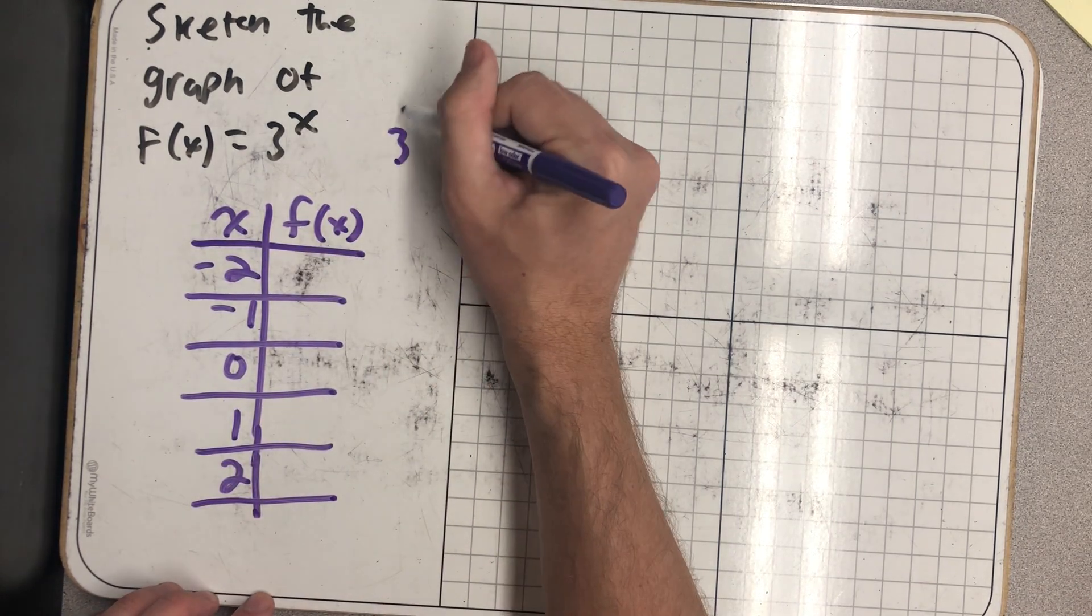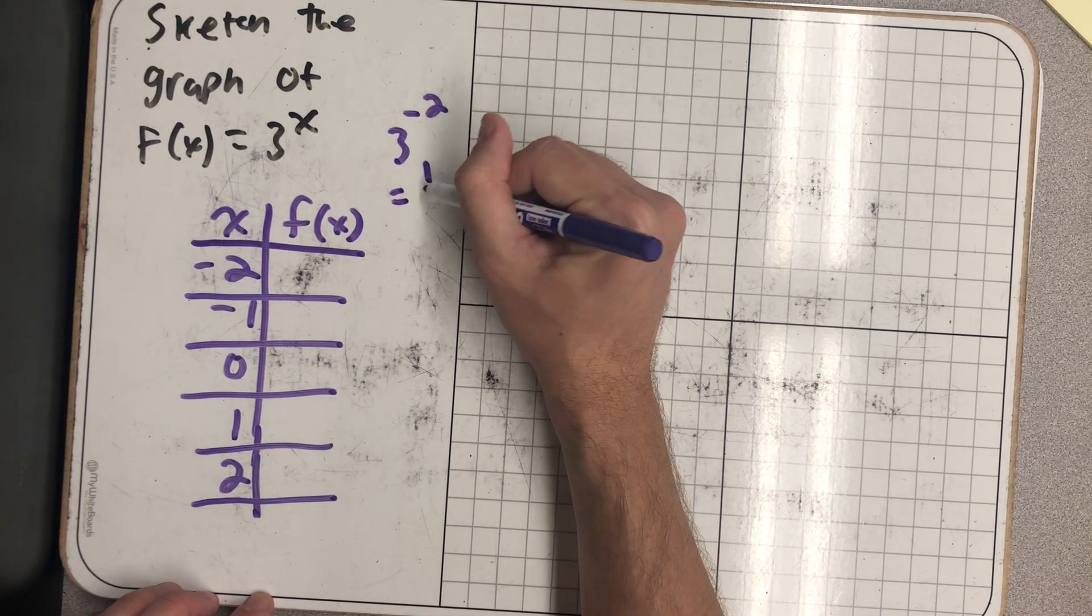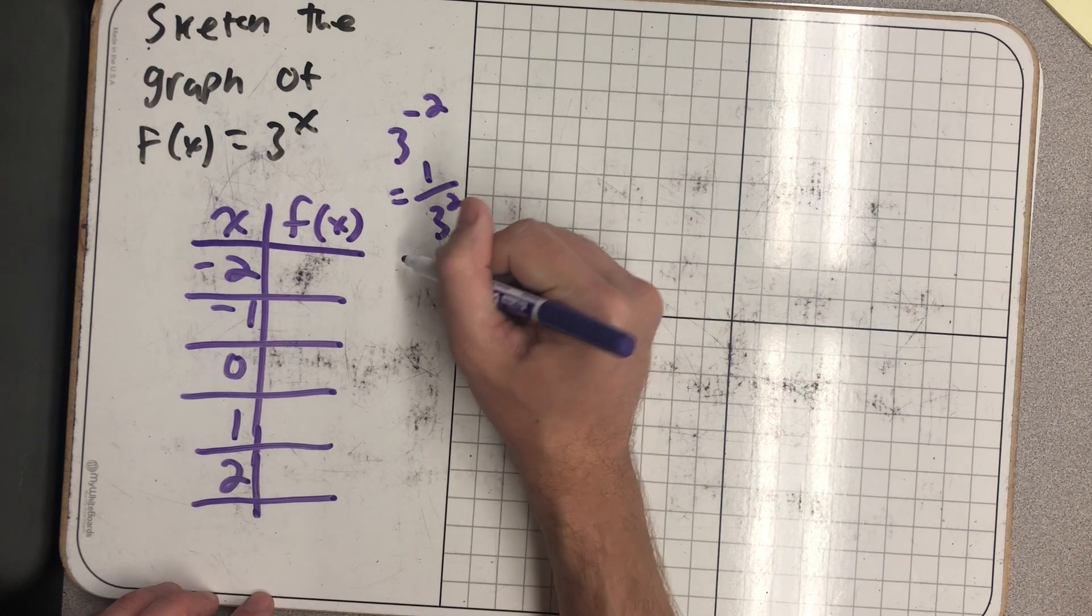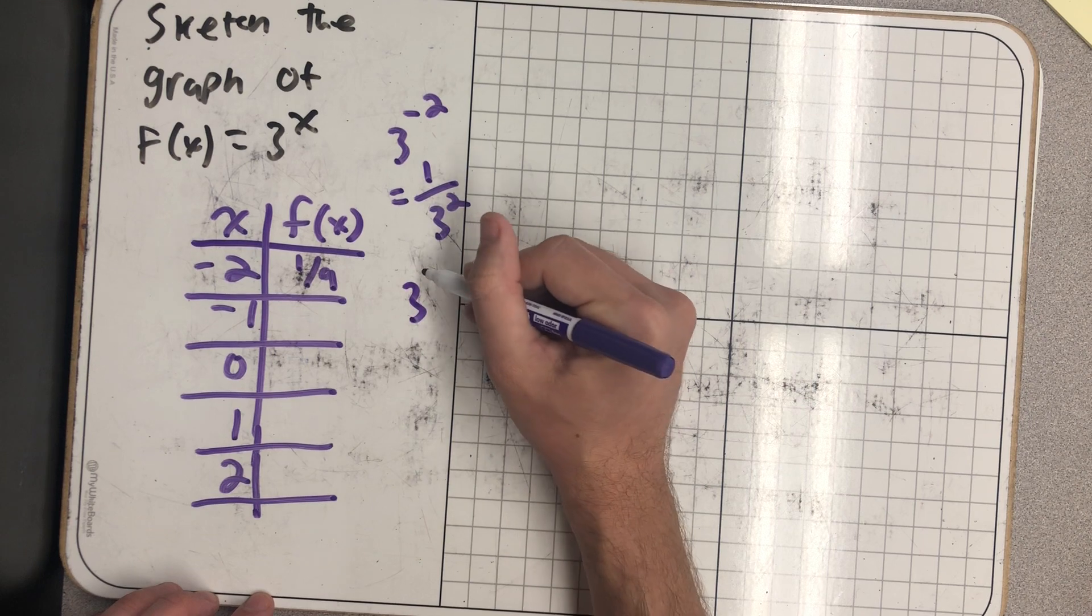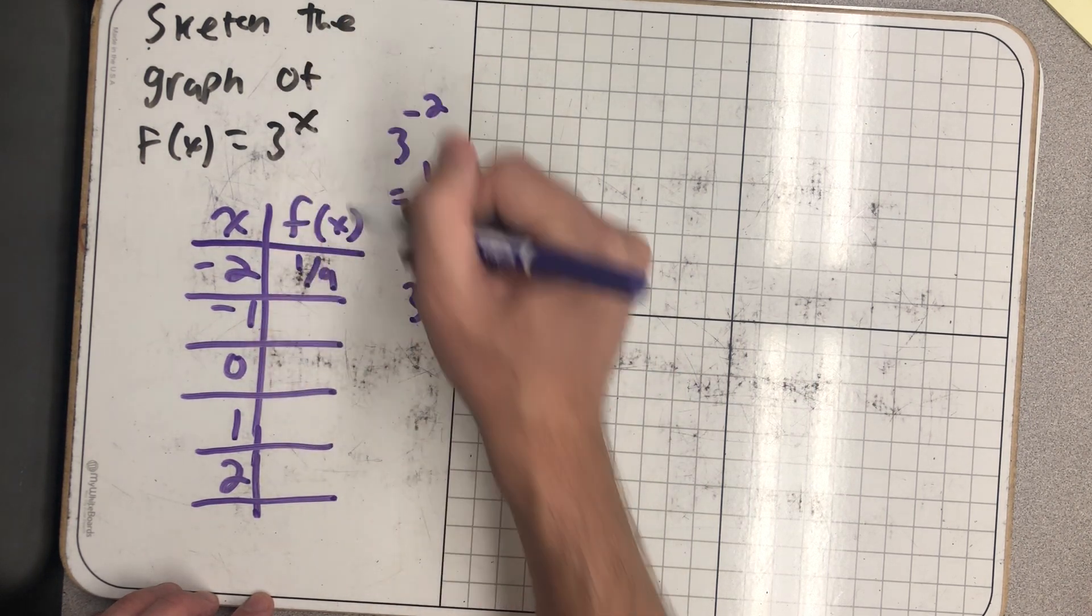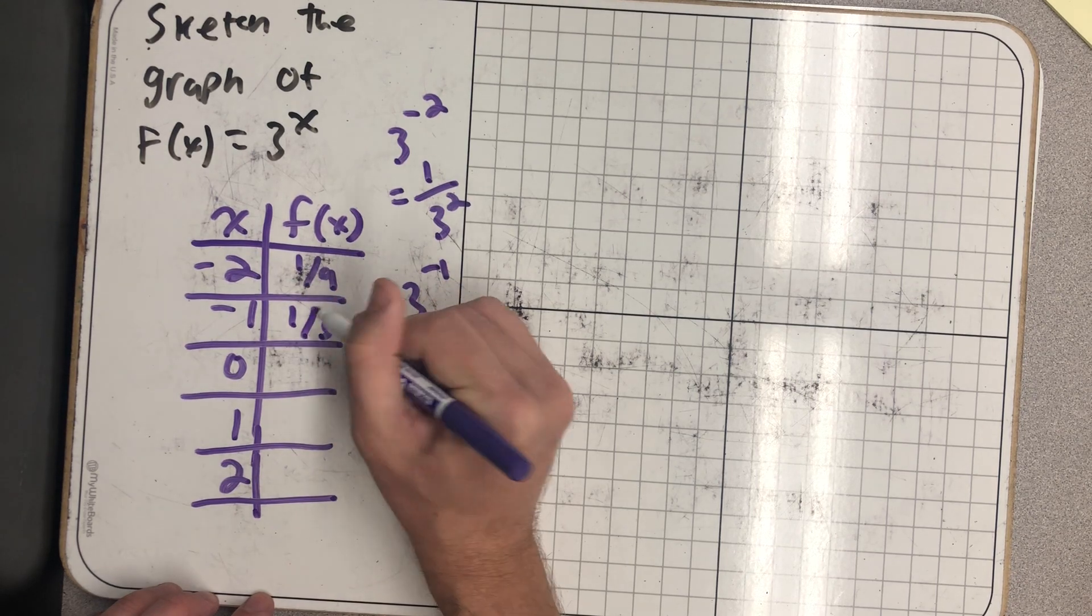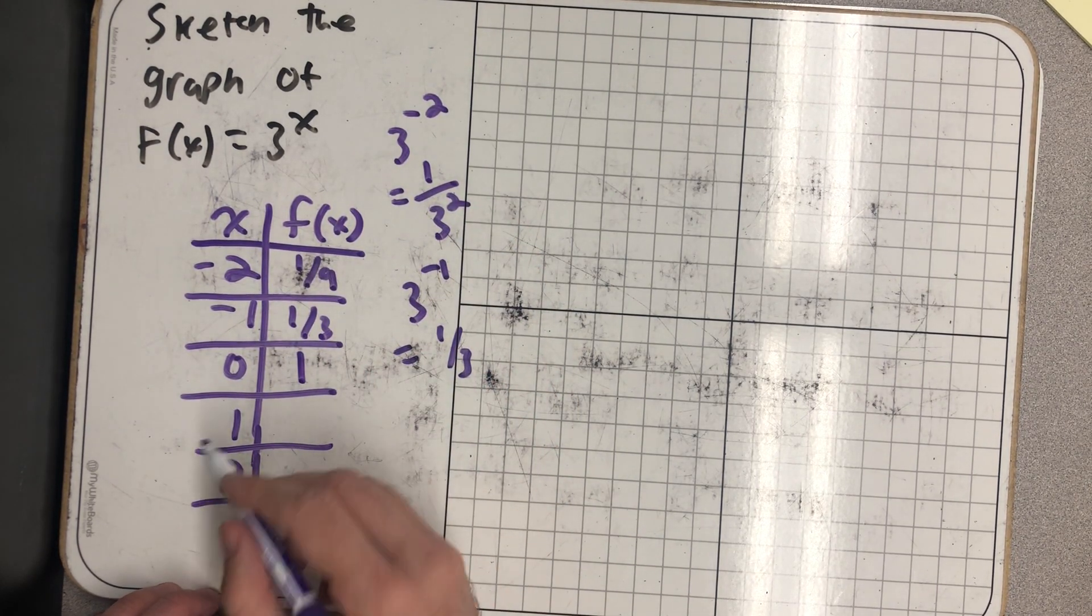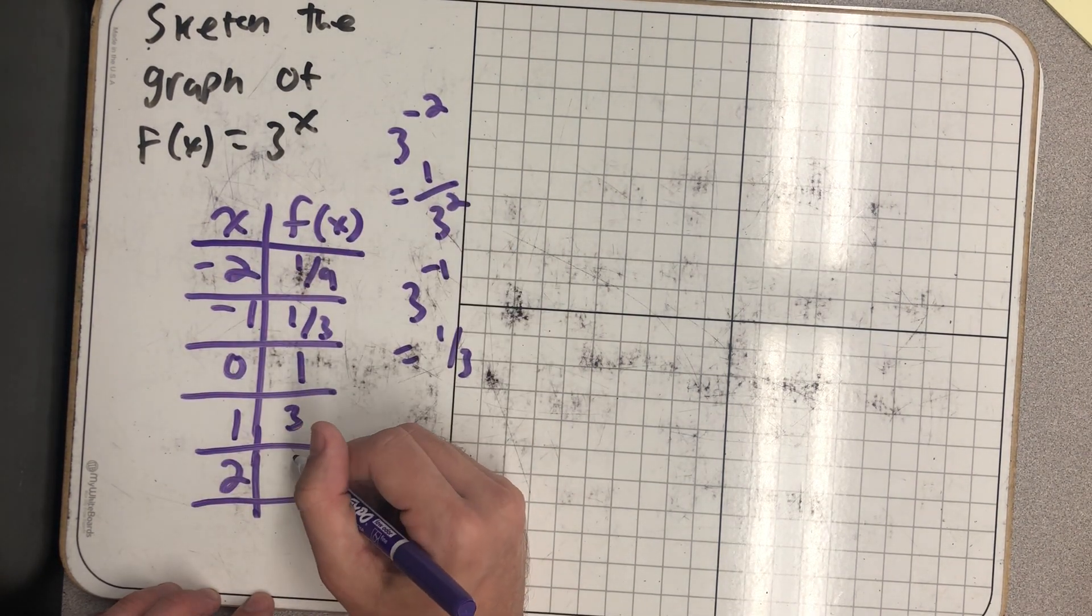So I get 3 raised to the -2 power, and I remember that that -2 power says that 3 really wants to be in the denominator as 3 squared, so that's going to be 1/9. 3 raised to the -1 power, really 1/3. 3 to the 0 power is 1, 3 to the 1st power is 3, and 3 to the 2nd power is 9.